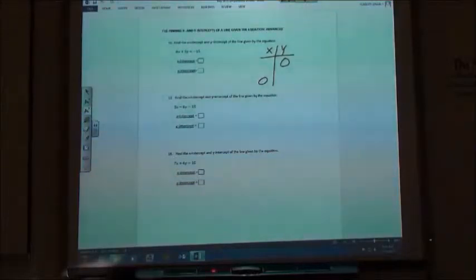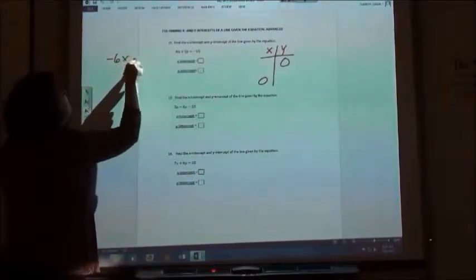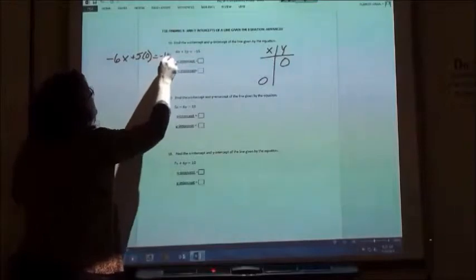The y-intercept is when x is 0, so the opposite one is 0. So to find my x-intercept, I'm going to put 0 in for the y and solve it. To find my y-intercept, I'm going to put 0 in for the x and solve it. So if I'm going to do my x-intercept, I'm going to say negative 6x plus 5 times 0 equals negative 15.